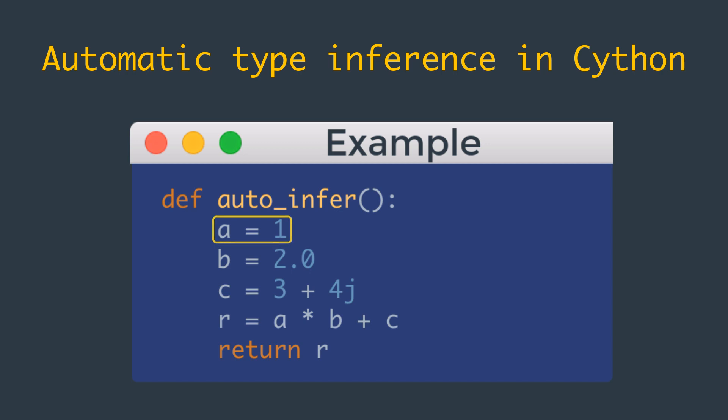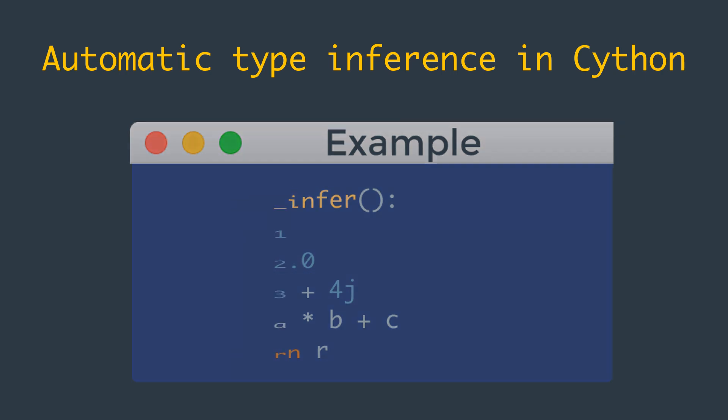Automatic inference is able to infer that the variable b is of type double in C and proceeds accordingly. To the end user it is as if b is a regular Python object, but Cython treats it as a C double for performance.